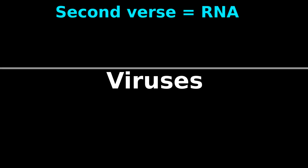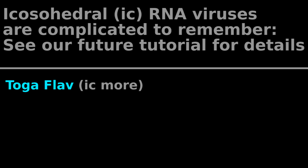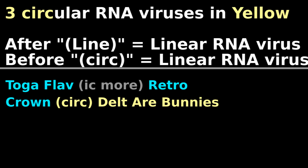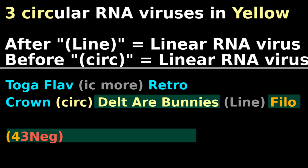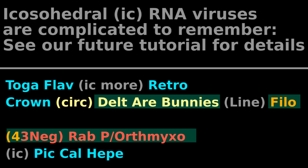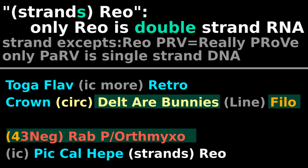Second verse RNA now: Toga Flavik, more retro, Crown, Cirque, Delta R, Bunnies, Line, Phi, Low — Four Three Neg — Rab, Porth, Mixo, Ick, Pick, Cal, Heap, Strands, Reo — No Envelope!